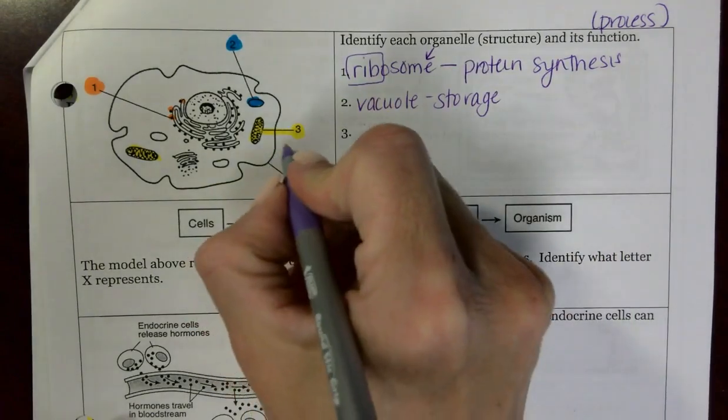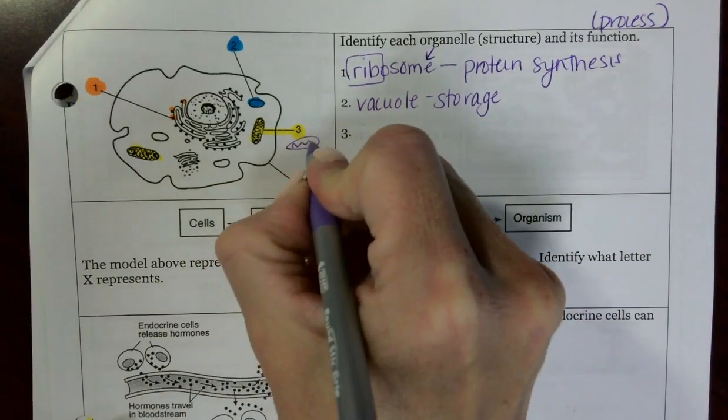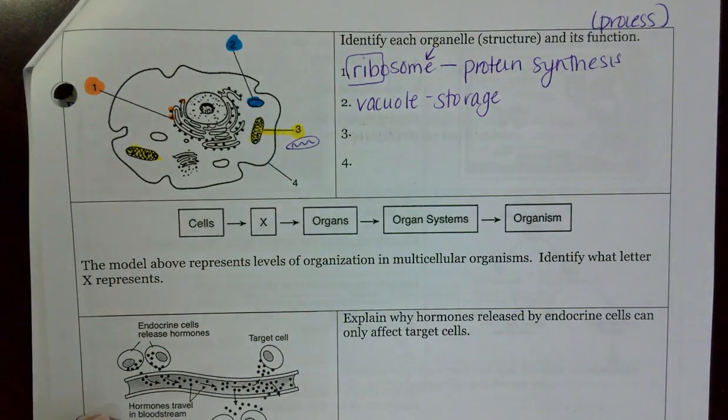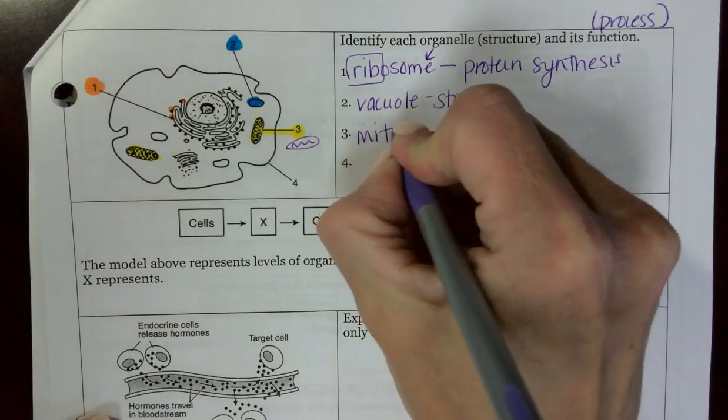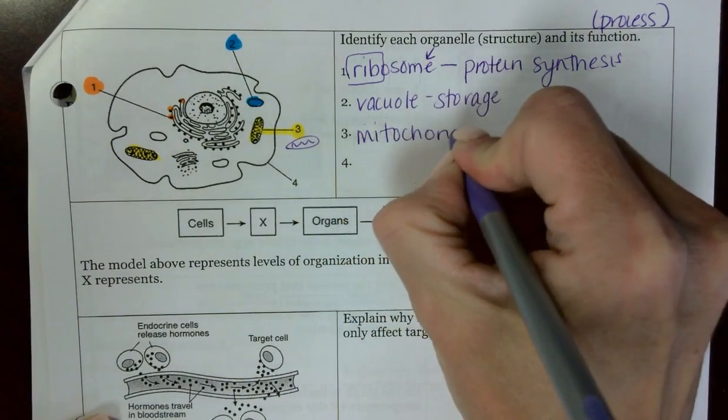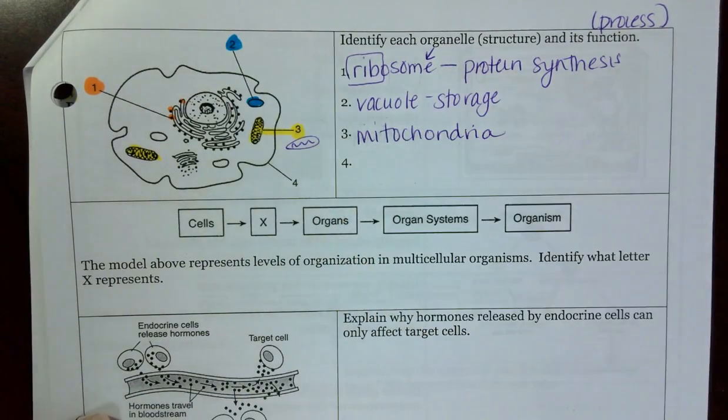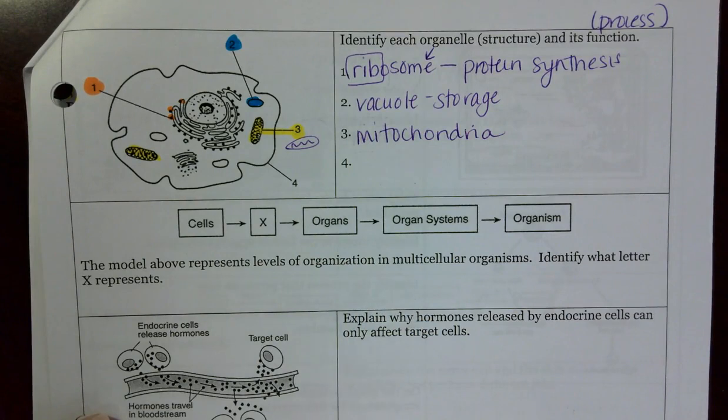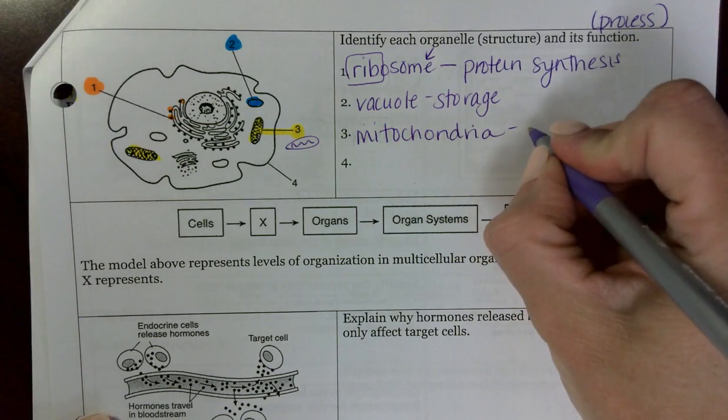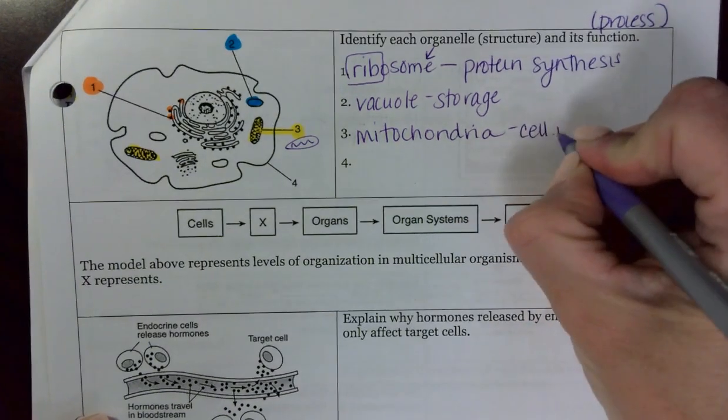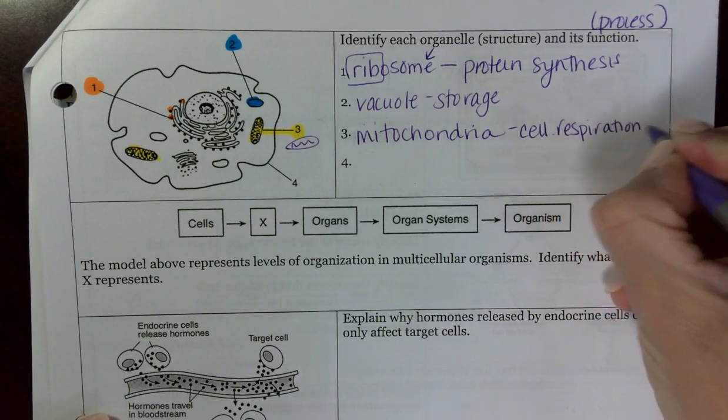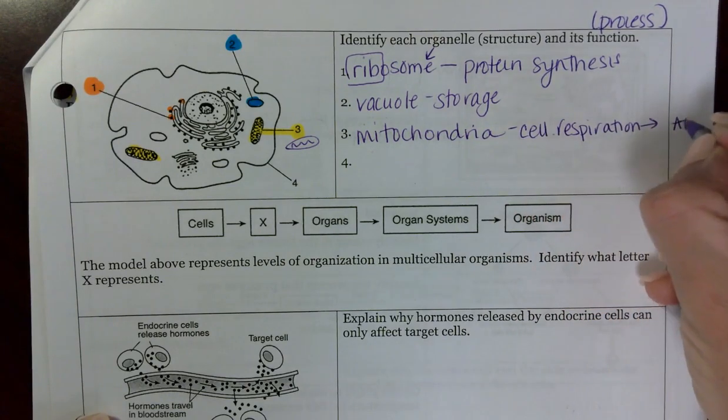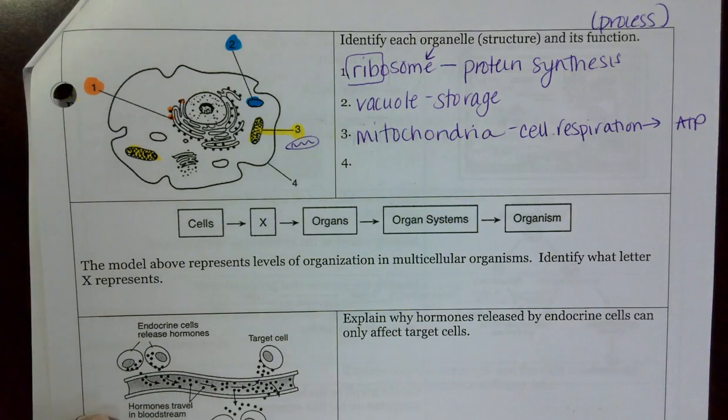Number three kind of has that squiggly little line in it that I've talked about a few times. That squiggly little line I always think about looks like an M. So therefore that's going to be a mitochondria. I do find most people remember that mitochondria is the powerhouse of the cell. But let's think of the specific process. The specific process is cellular respiration. And keep in mind, cellular respiration is responsible for making that usable energy known as ATP.